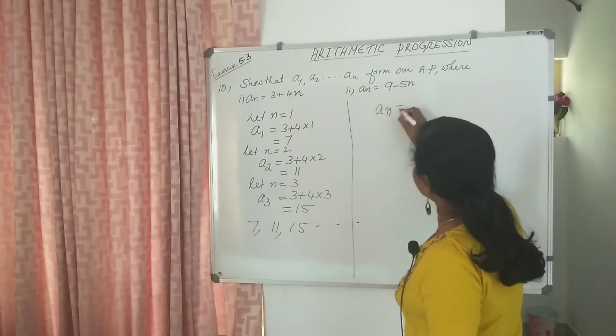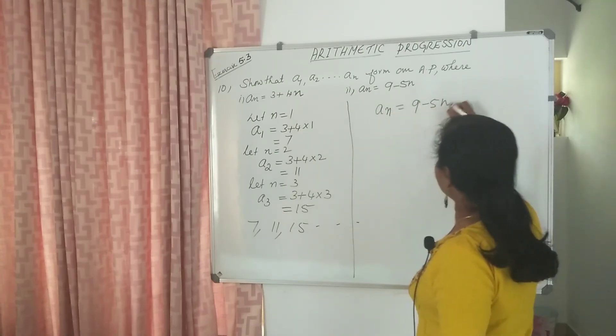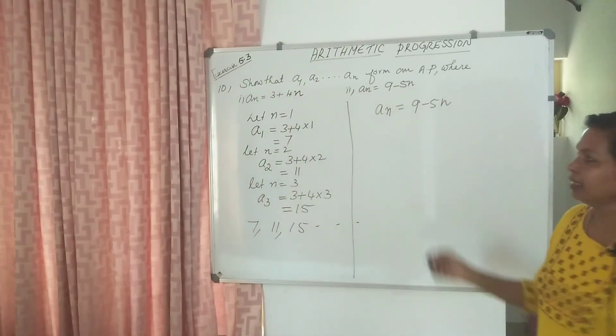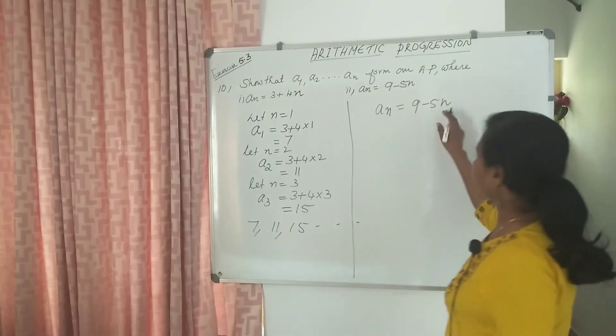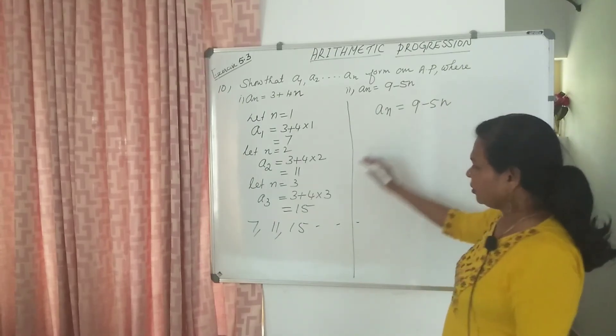Here An equal to 9 minus 5N. Let N equal to 1, 2, 3, 4.